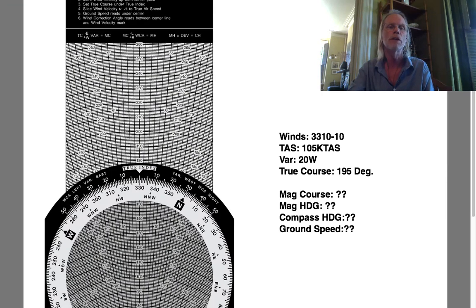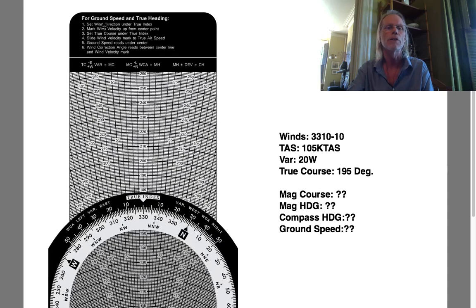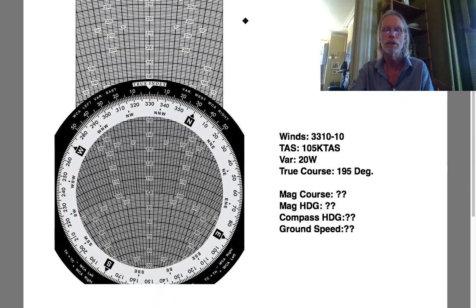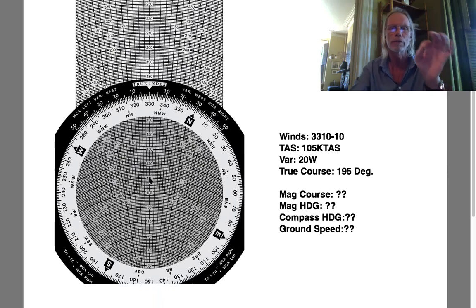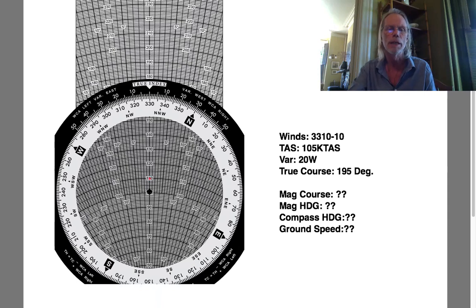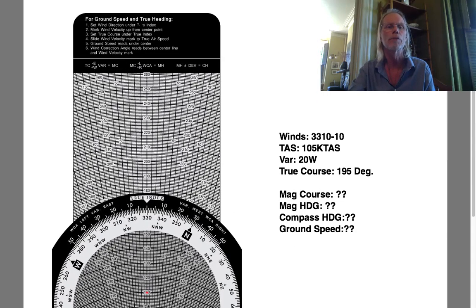Then it says slide the wind velocity mark up. Set true course under true index — we did that. Mark wind velocity up from the center point — 10 knots. So 100 plus 10 is 110. I'm just going to double-click here, which is the equivalent of using a pencil to make a mark. And there it is. So I made a 10-knot wind mark up from my baseline of 100. Mark wind velocity up from center point — done.